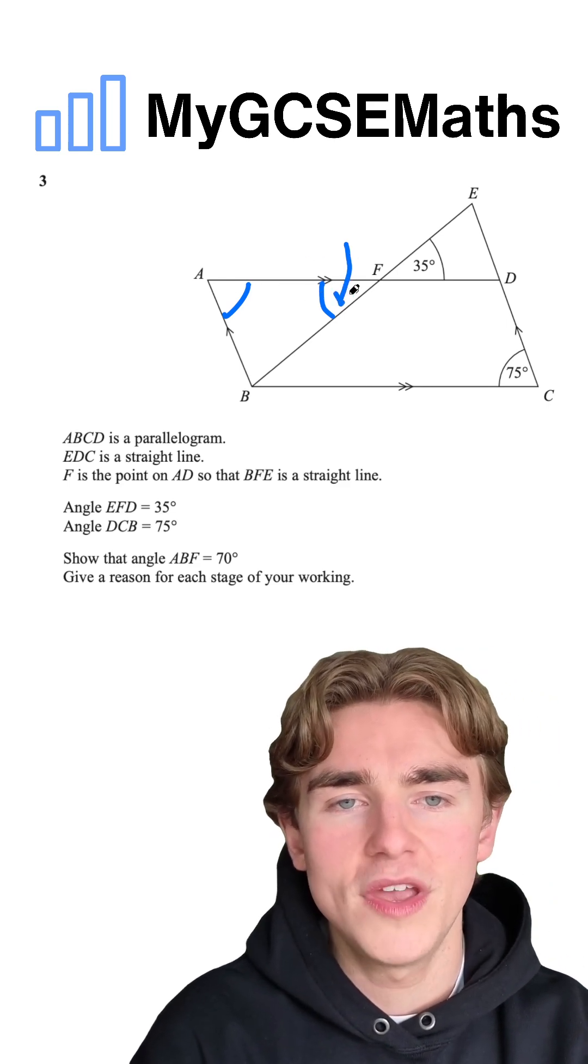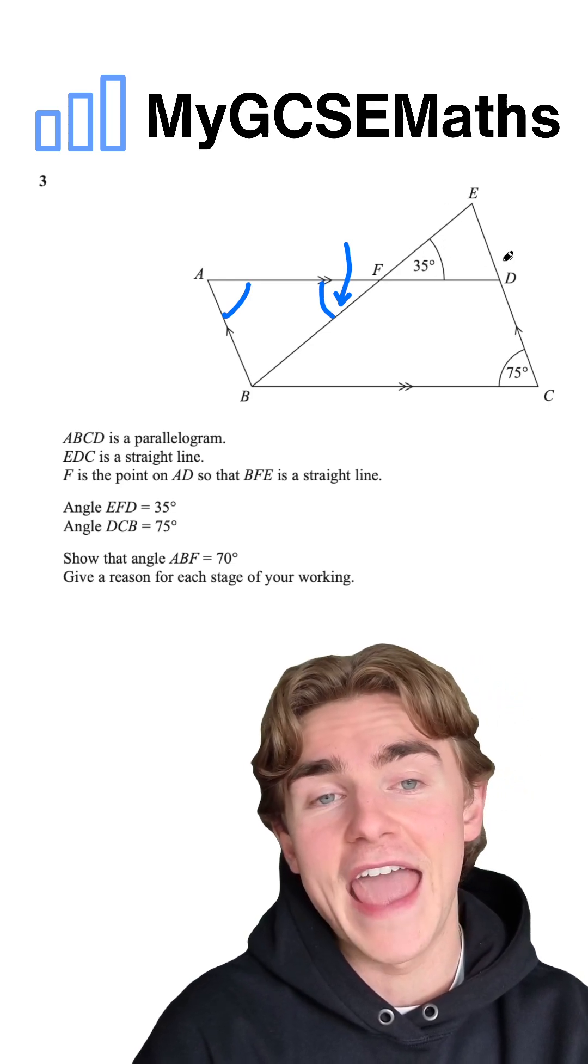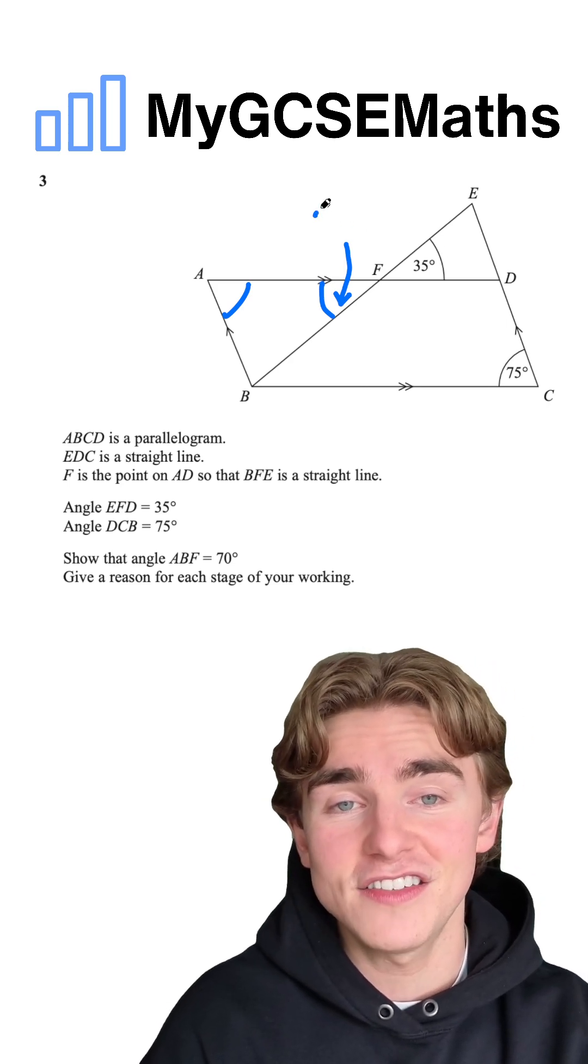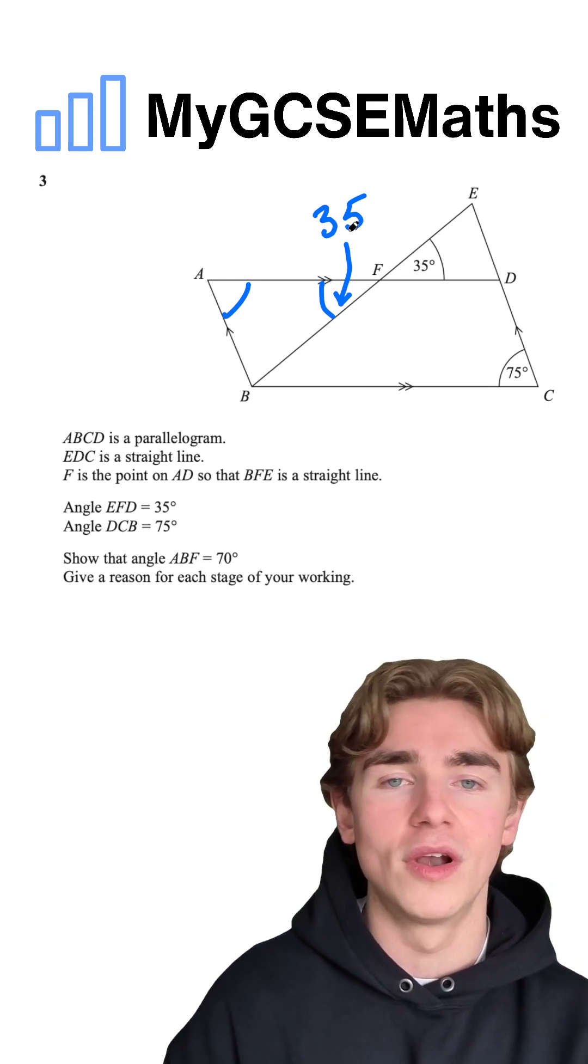So how can I work out these two? Well, first off, looking at this one, we can see that this is vertically opposite to this angle here, angle EFD. So we can actually say that this one is going to be 35 degrees. Why? Because vertically opposite angles are equal.